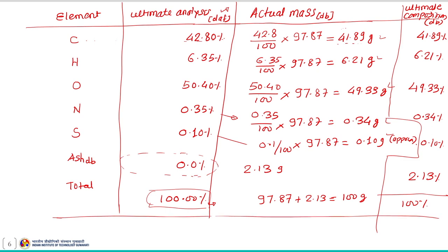So the ultimate composition on dry basis is: C = 41.89%, H = 6.21%, O = 49.33%, N = 0.34%, S = 0.10%, and ash = 2.13%, which sums to 100 percent. This is how we estimate the ultimate composition on a dry basis when the ultimate analysis on a dry and ash-free basis is known, and the reverse conversion can be done as well.